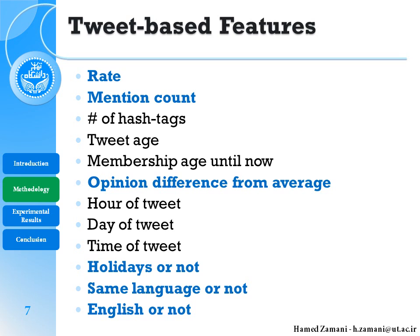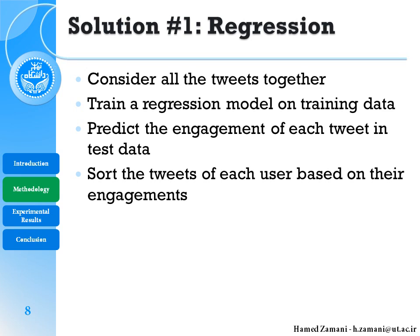Now we explain our two solutions. For regression, the model considers all the tweets together: we train a regression model on the training data, predict the exact engagement of each tweet in the test data, and sort them based on the engagement for each user.